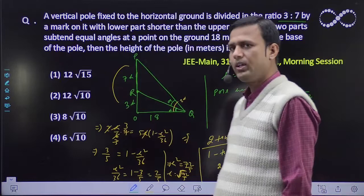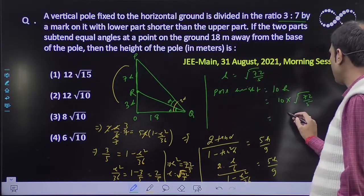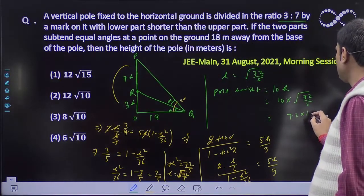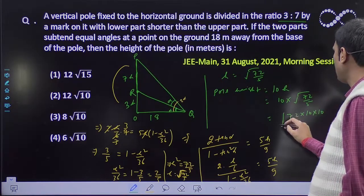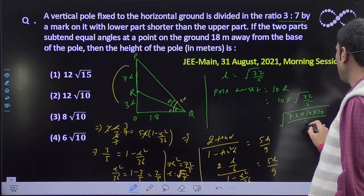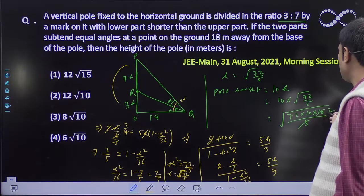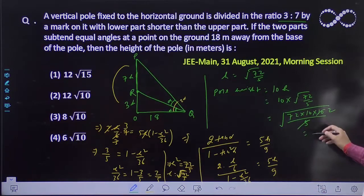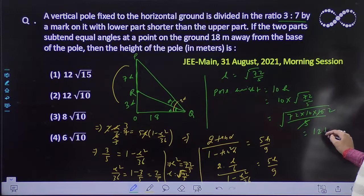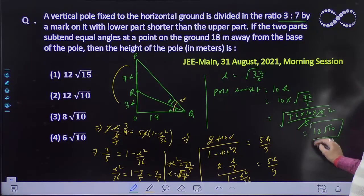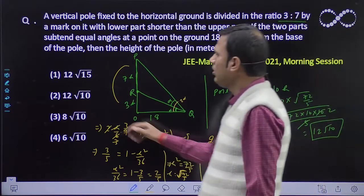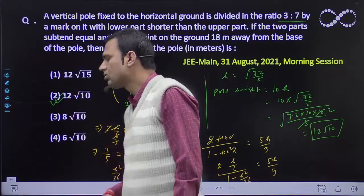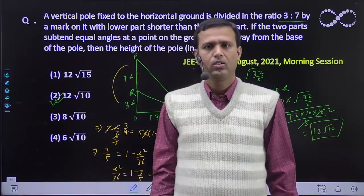But this format is not given anywhere. So you need to solve it a bit more. So 72 into 10 into 10, let's take the square root, upon 5. 5 and 10 cancel. 72 into 2 is 144. Square root of 144 is 12. So this becomes 12 root 10. So height equals 12 root 10. Okay, thank you.